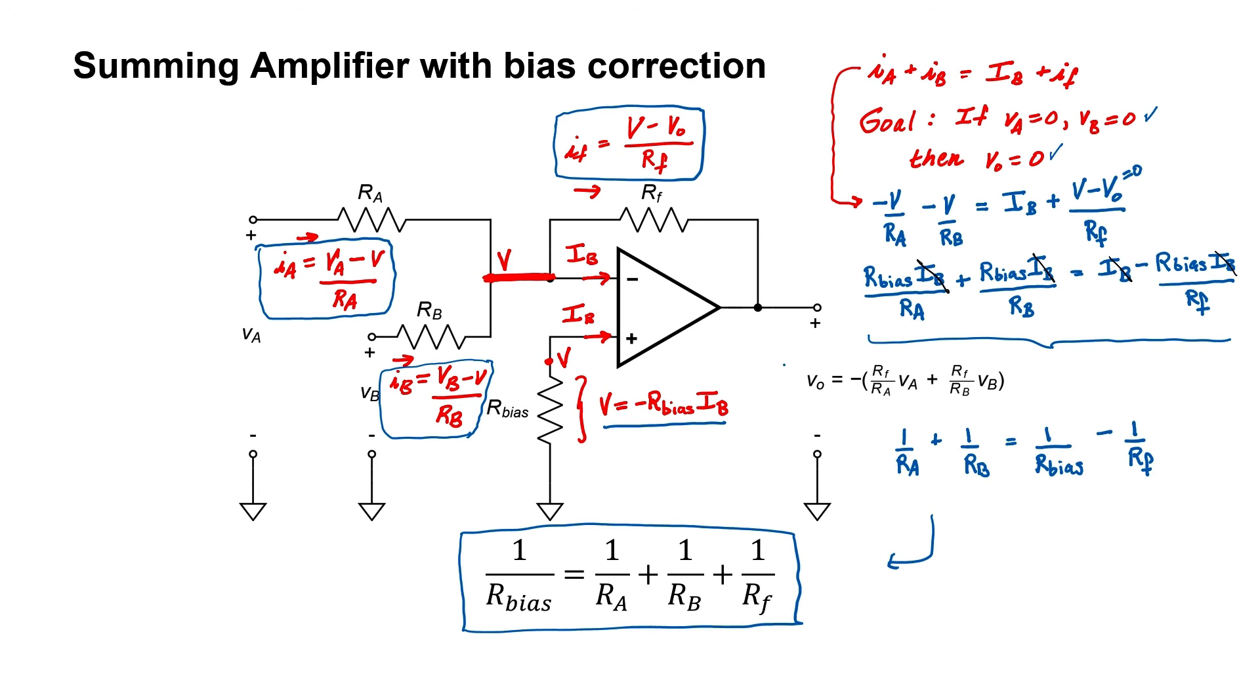Once that's done, the derivation of the expression for the output voltage itself becomes identical to that done for the circuit without the bias correction.